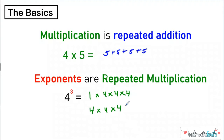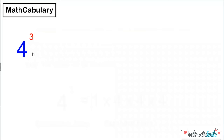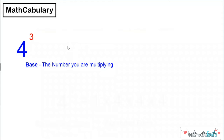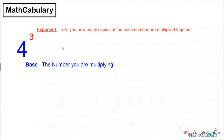So that's the basics — multiplication is repeated addition, and exponents are repeated multiplication. Let's take a look at some mathcabulary we're going to need for this entire unit. Here we have four to the third power. This bottom number right here is called our base number — it's the number that we're going to be multiplying. And this little number up here, the little teeny number, is called the exponent. We're going to be calling it the exponent in these lessons, and it tells you how many copies of the base number are going to be multiplied together.